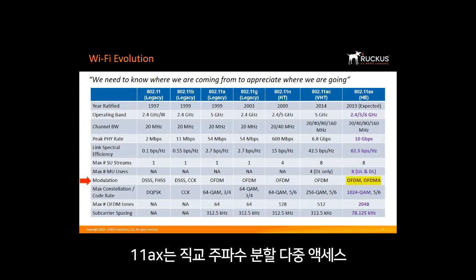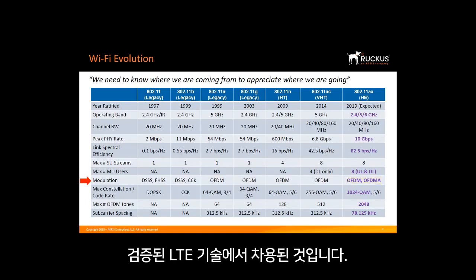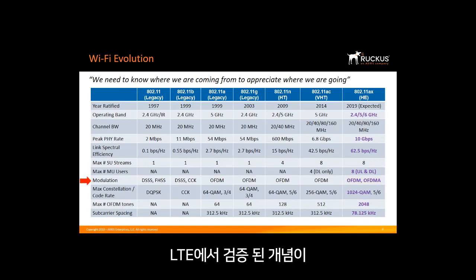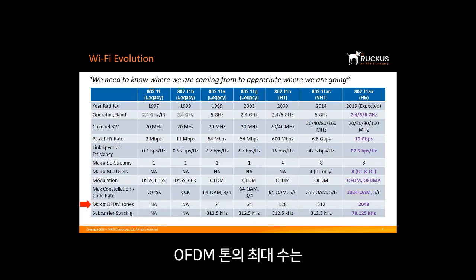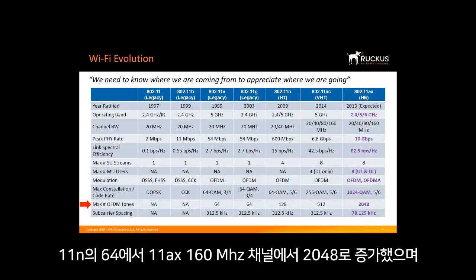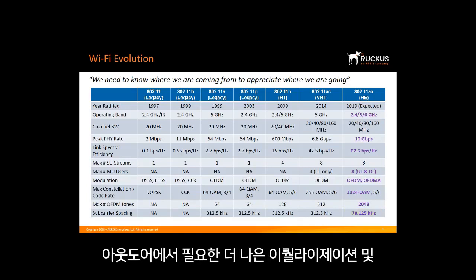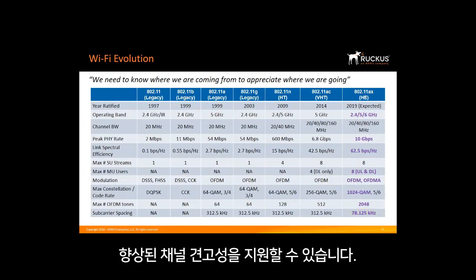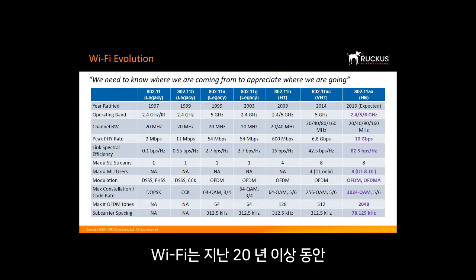11ax introduced a new modulation scheme called Orthogonal Frequency Division Multiple Access, or OFDMA. This is new to Wi-Fi but has been in use in other standards, especially LTE, where it works very well. 11ax also added a modulation scheme of 1024 QAM, which allows higher data rates. The maximum number of OFDM tones is increased from 64 in 11n up to 2048 on a 160 MHz channel in 11ax. The subcarrier spacing has been reduced four times, from 312.5 kHz to 78.125 kHz, which allows better equalization and enhanced channel robustness required for outdoor operation.